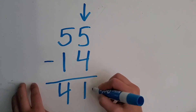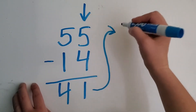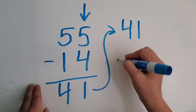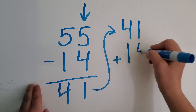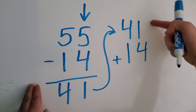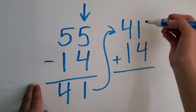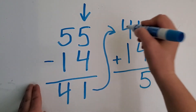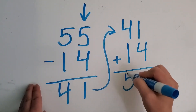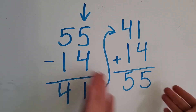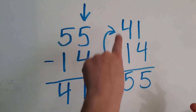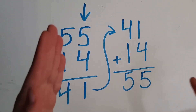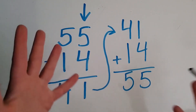Now let's check it using addition. We're going to put 41 up here, because it goes in the opposite way for addition. So 41 plus 14. We have a part and a part; now let's find the whole. We start with the ones side: one plus four equals five. And then four plus one equals five. So the whole is 55. Is that the whole in this one too? Yes, because we start with the whole in subtraction and in addition we finish with the whole. So we checked the answer and saw that it is correct.